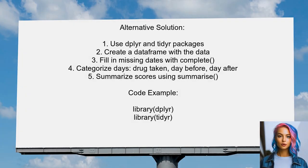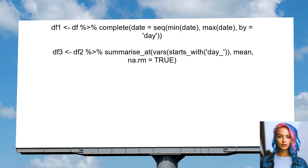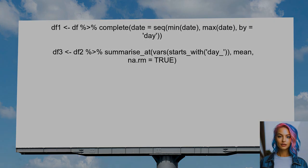This user suggests using the dplyr and tidier packages in R to summarize data based on date calculations. First, they create a data frame with the provided data. Then they fill in missing dates using the complete function, making implicit observations explicit. Next, they categorize the days into those when a drug was taken, the day before, and the day after. Finally, they summarize the scores for each category using the summarize function, resulting in a clear output table.